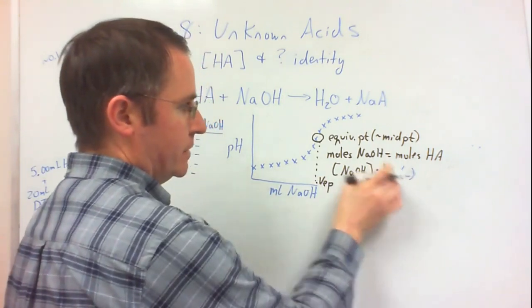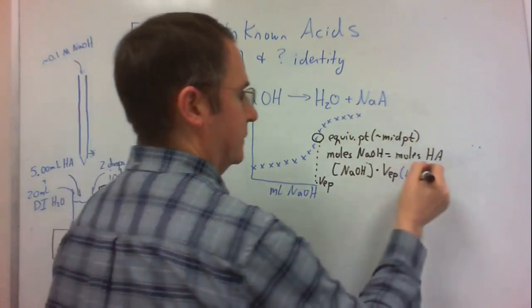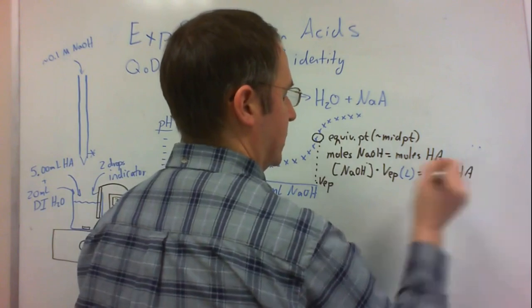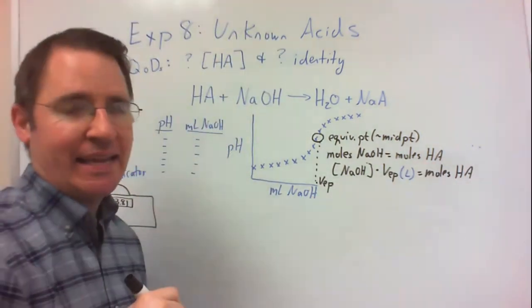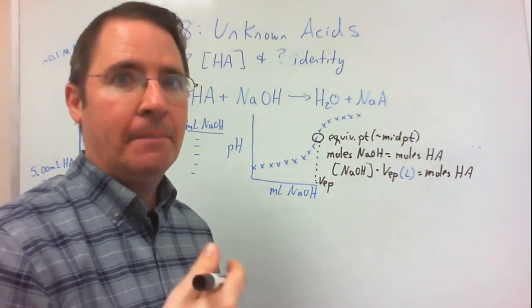All right, those two numbers is the moles of sodium hydroxide, and at the equivalence point, that is my moles of weak acid. So I'll calculate, in other words, the amount of weak acid I had originally in my container by multiplying the concentration of sodium hydroxide by the equivalence point volume.